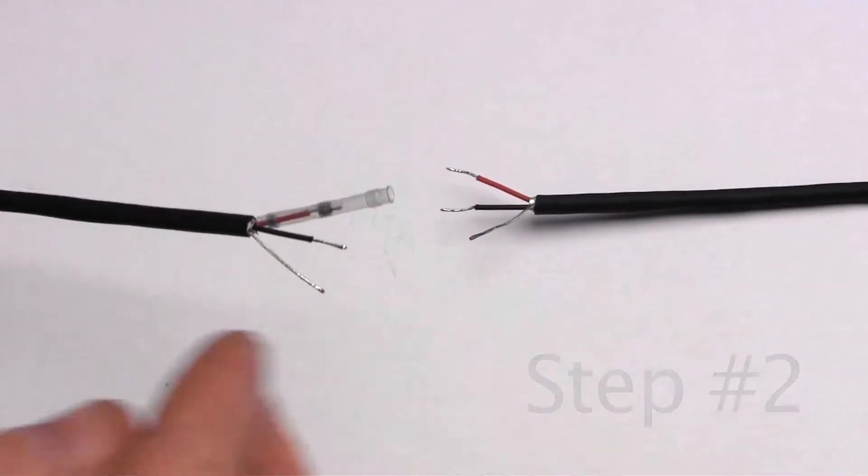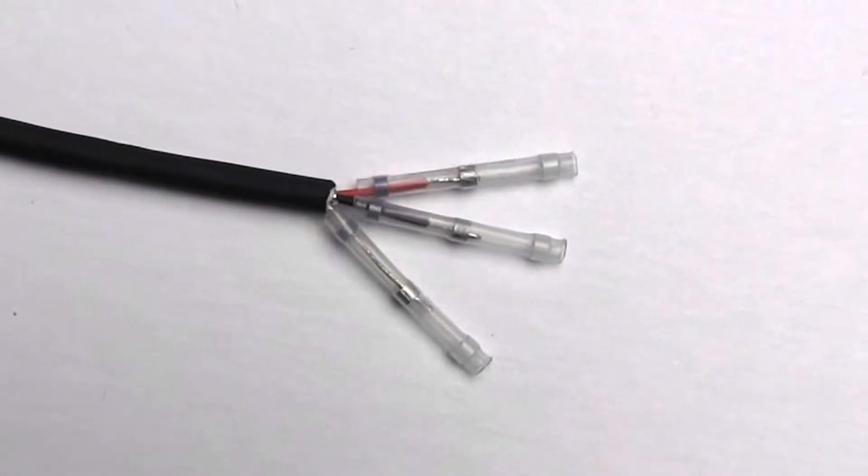Step two: slide the solder sleeves onto the wires, making sure the tinned ends are inside the solder rings.